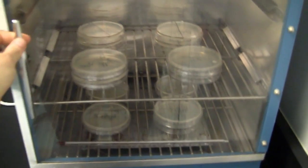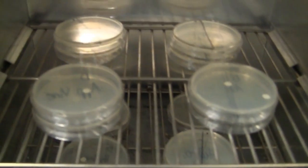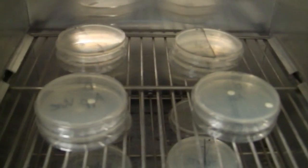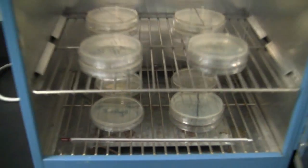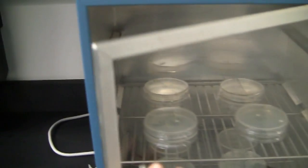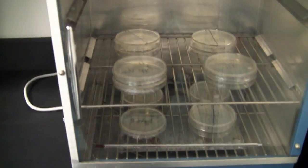Some petri dishes with the filter disc were placed on top and on bottom, as well as the petri dishes that were labeled with a line down the center of the back. There was a thermometer inside the incubator to make sure that the temperature is at 37 degrees Celsius.